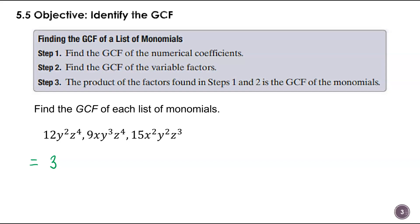Now let's look at the variables. My first term doesn't have an X, so X can't be part of my greatest common factor. For the Y's, we have Y squared, Y cubed, Y squared — so it will be Y squared. For the Z's, we have Z to the fourth, Z to the fourth, Z to the third — it has to be the smallest exponent, so Z to the third. Therefore our GCF is 3Y²Z³.